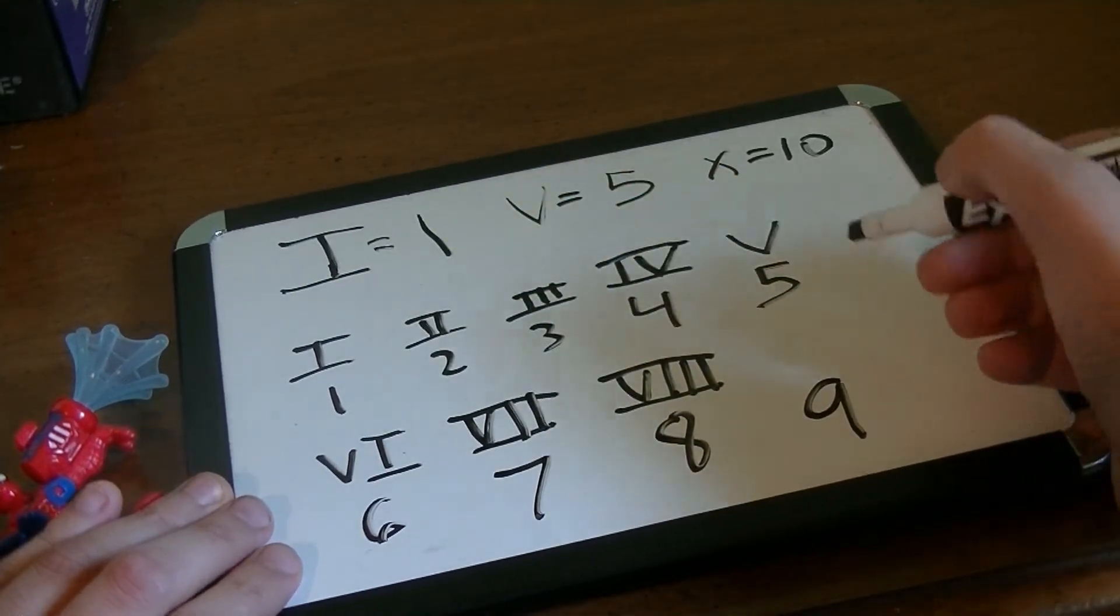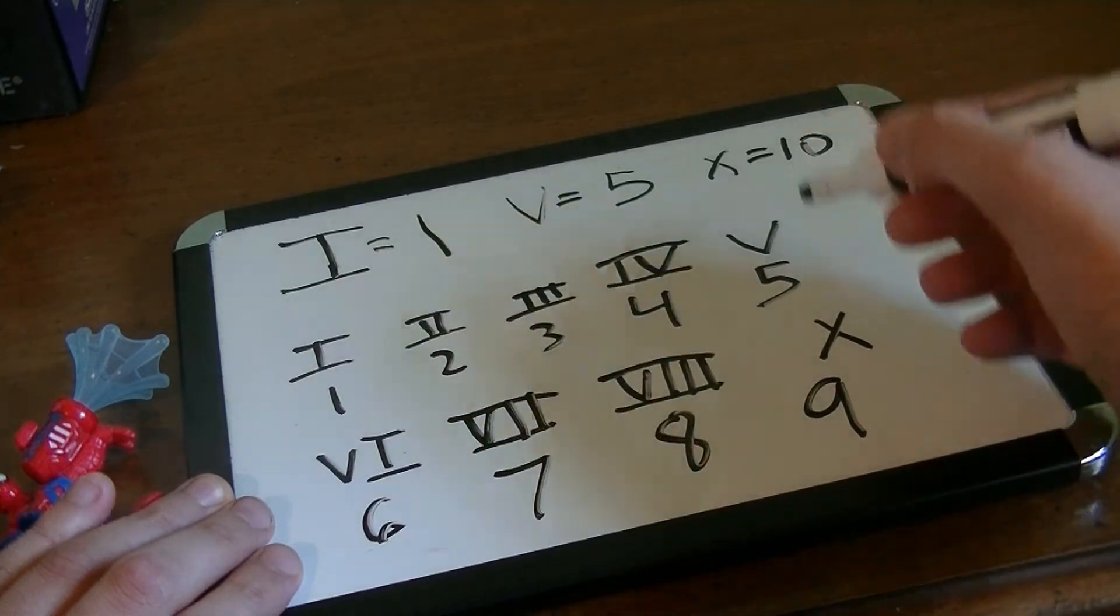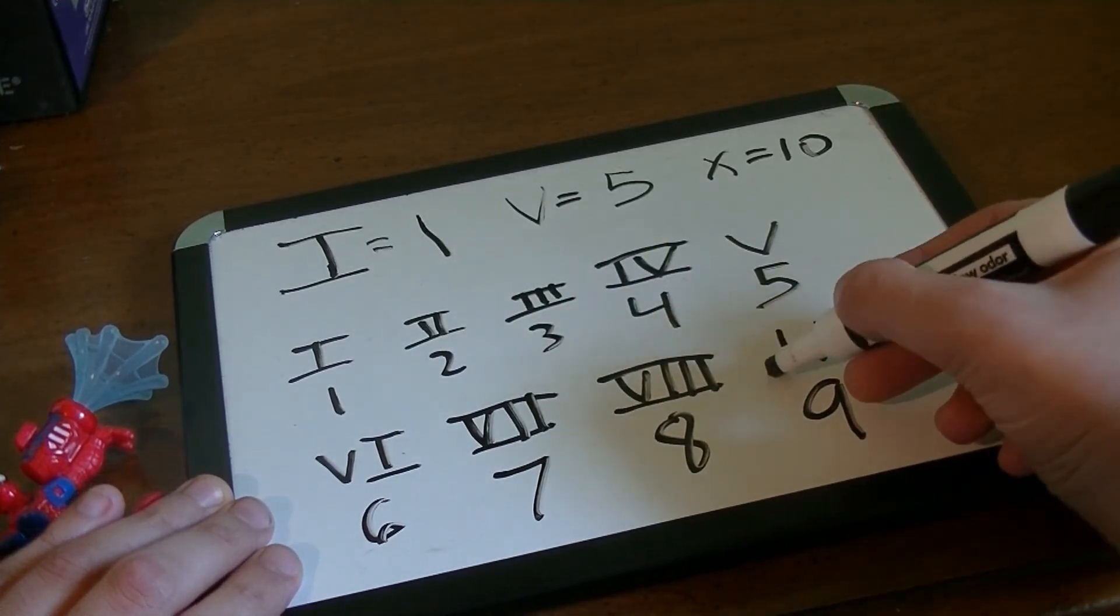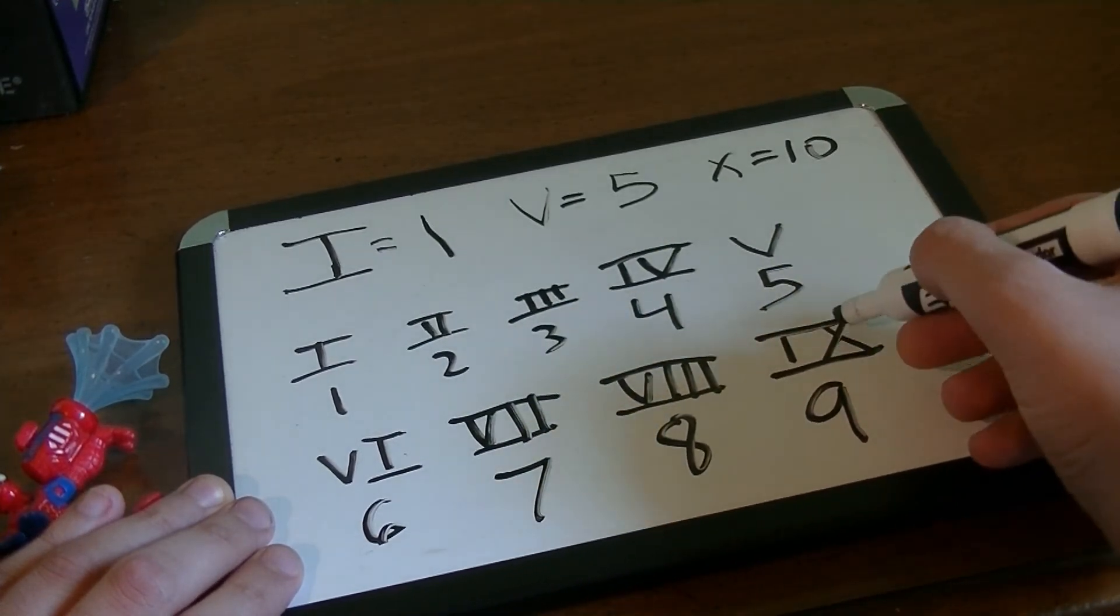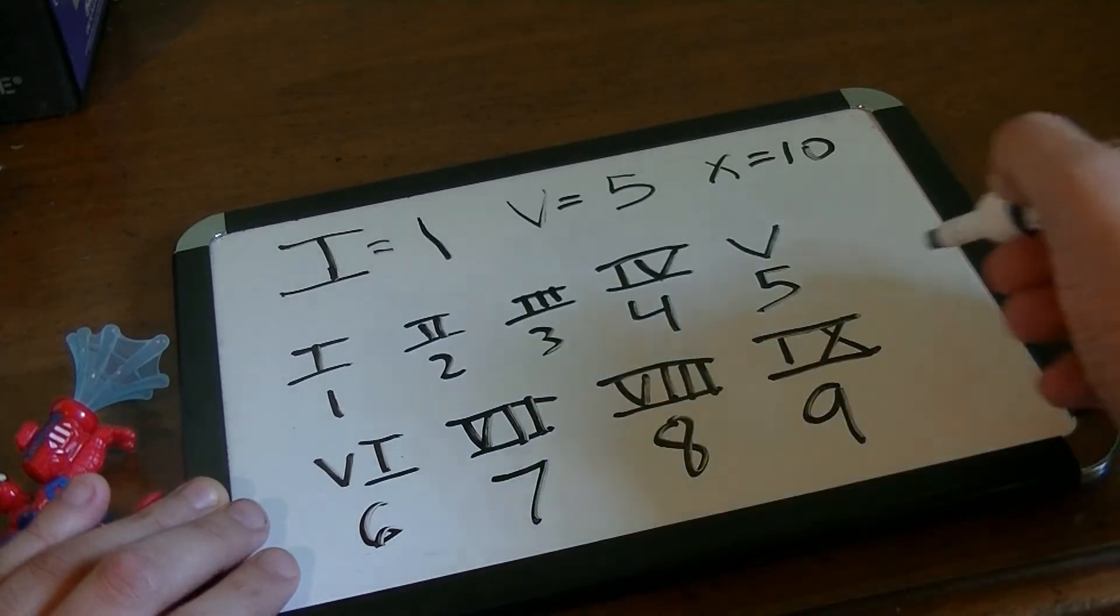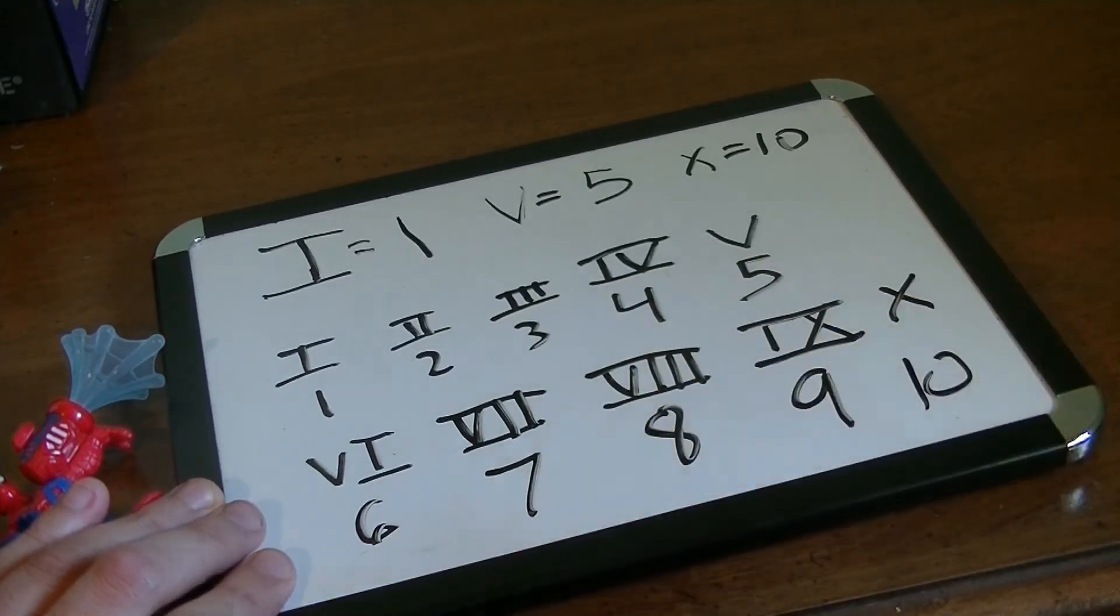The symbol for 10 is X, but to do a 9 we do the I, so it'd be 10 minus 1 equals 9. And then for 10 we just do X.